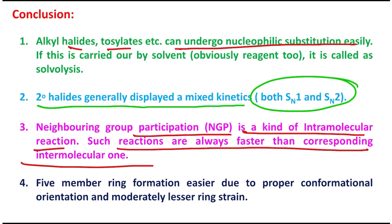And remember, five-member ring formation is relatively easier due to proper conformational orientation and moderately lesser ring strain. I repeat the word 'moderately lesser'.